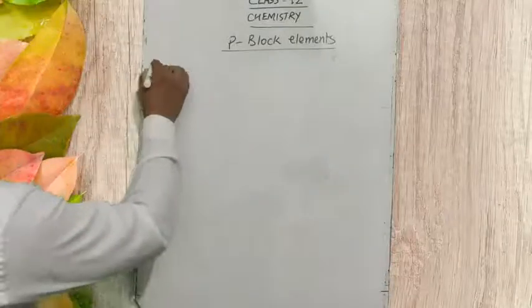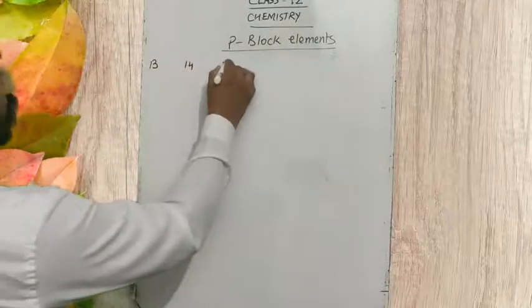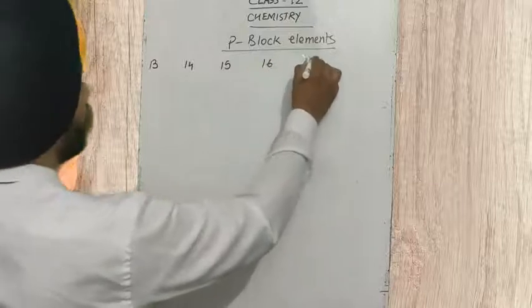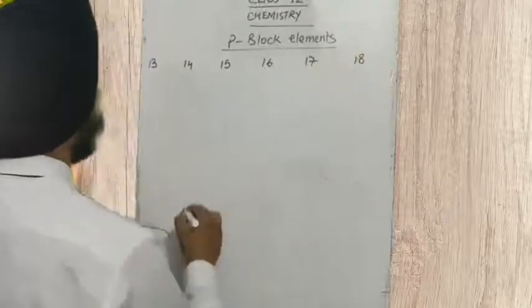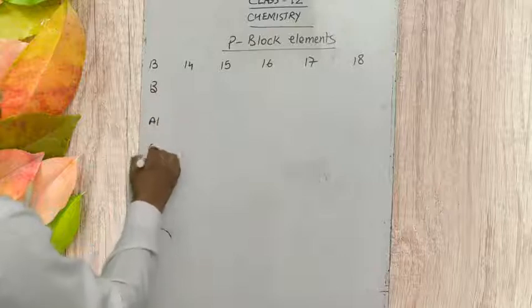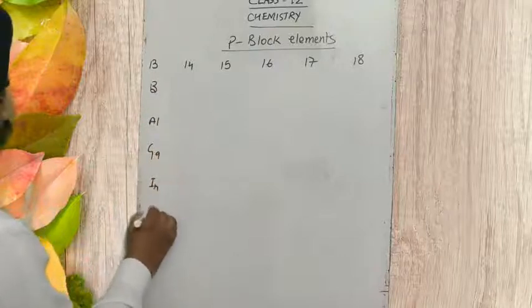We have group number 13, 14, 15, 16, 17, and 18. Group 13 contains: boron, aluminium, gallium, indium, and thallium.